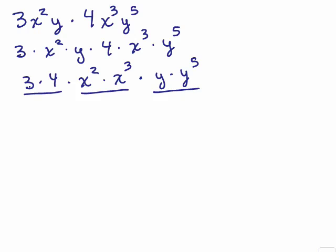And now, this is just 3 times 4. Those are not exponents. Those are just coefficients. So 3 times 4 is 12. And now I could use my product rule here, since these have the same base. I write the base once and add the exponents.